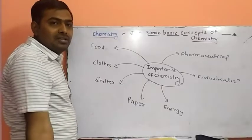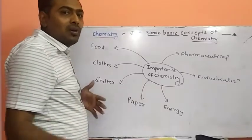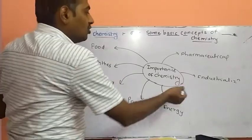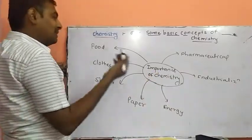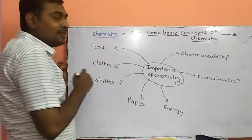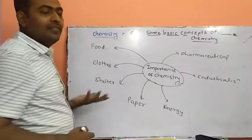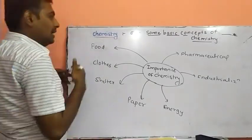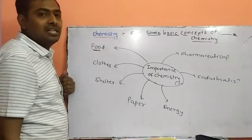We have studied from previous video what is chemistry. Right now, we will study what is the importance of chemistry. Chemistry is important for basic needs like food, cloth, shelter. What is the importance in the food? Different types of fertilizers and pesticides which are prepared in the chemical industry are important for the generation of food.